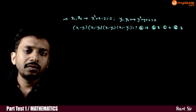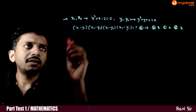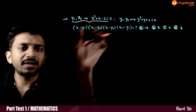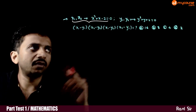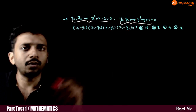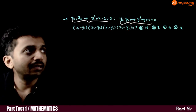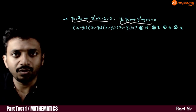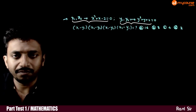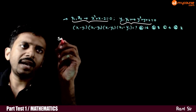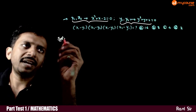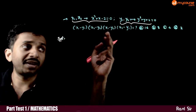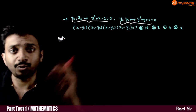Welcome students. This question may be given that x1 and x2 are the roots of x squared plus x minus 2 equals 0, and y1 and y2 are the roots of y squared plus y plus 2 equals 0. You are asked to find x1 minus y1 into x2 minus y2 into x1 minus y2 into x2 minus y1.